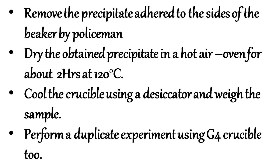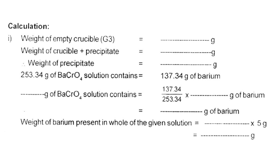Perform a duplicate experiment using a G4 crucible as well. Now let us discuss the calculation part. The weight of the empty crucible is equal to x grams. The weight of the crucible plus precipitate is equal to y grams. Therefore, weight of precipitate equals weight of crucible plus precipitate minus weight of empty crucible. The molecular weight of barium chromate is 253.34 grams.